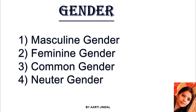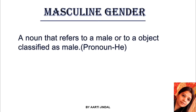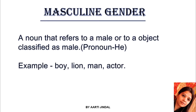Let us start discussing all these types of genders one by one. The first is masculine gender — a noun that refers to a male or to an object classified as male, and we use the pronoun 'he' for this gender. Whenever we are talking about a noun that refers to a male, that particular noun will be considered under masculine gender. Examples are: boy, lion, man, actor — these are nouns which refer to a male, so they come under masculine gender.